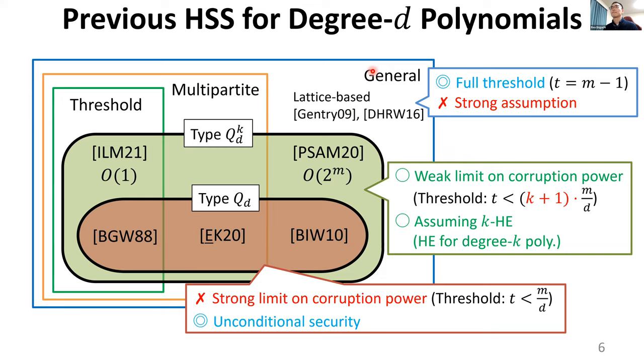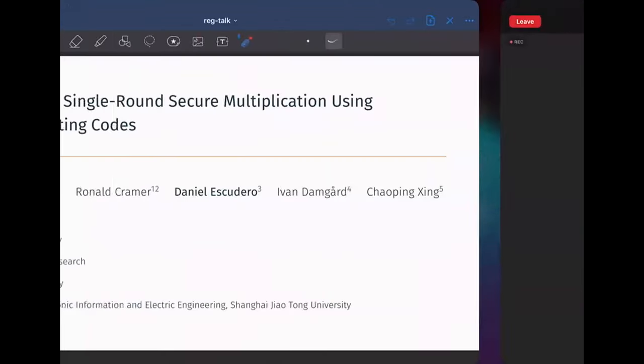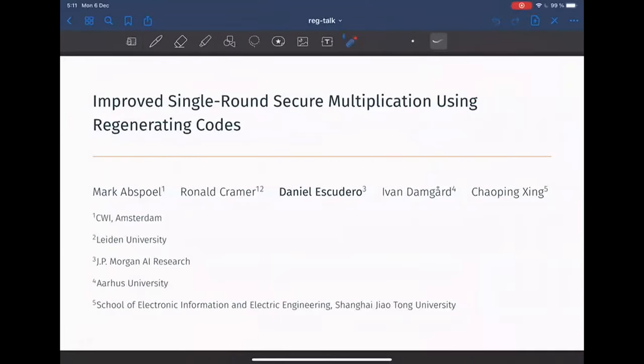I would like to proceed now to the presentation on Improved Single Round Secure Multiplication Using Regenerating Codes, a paper by Mark Atzpaul, Ronald Kramer, Ivan Damgo, Daniel Escudero, and Xiaoping Xing. Daniel will be presenting for us. Please share your screen and you're welcome to start anytime you want.